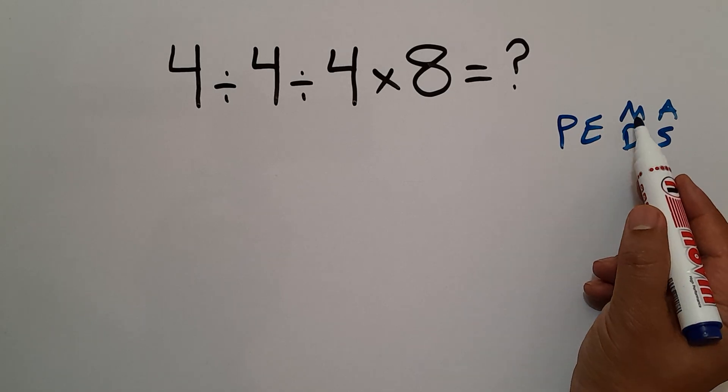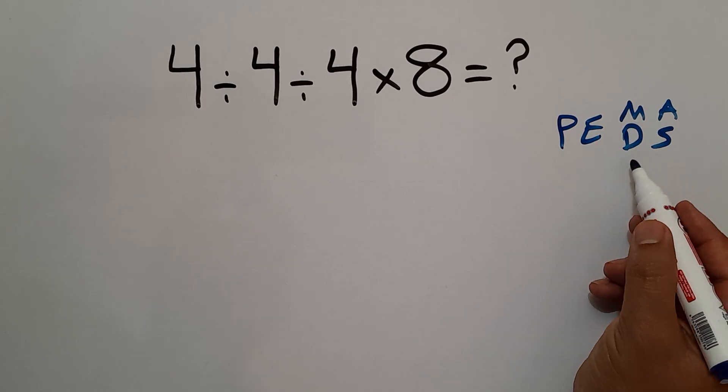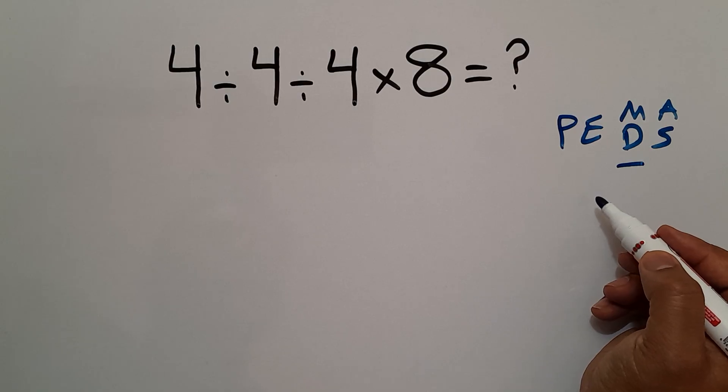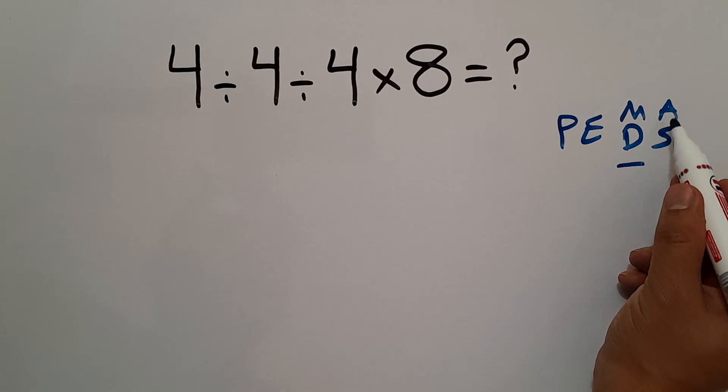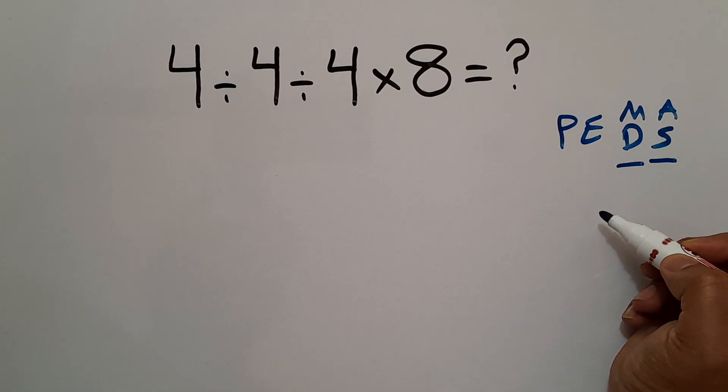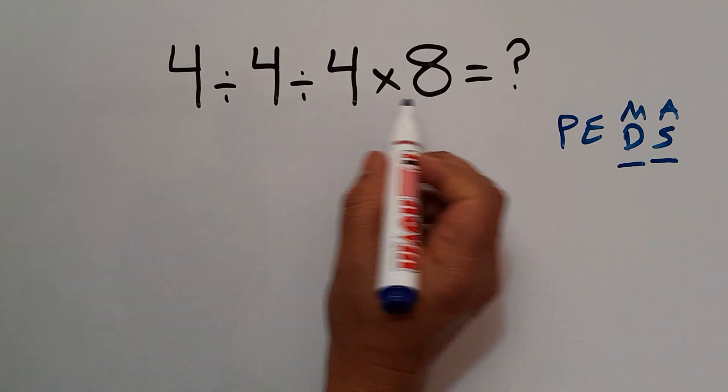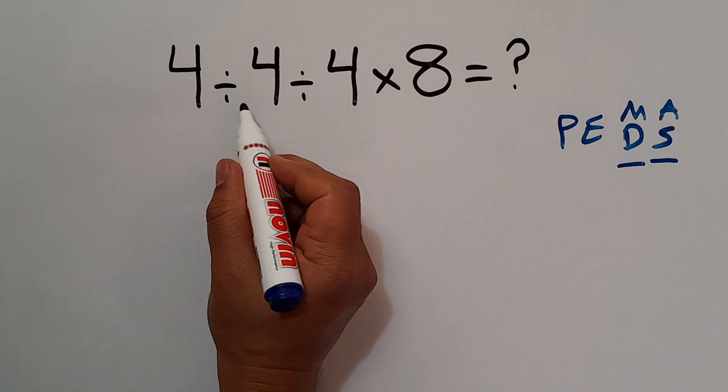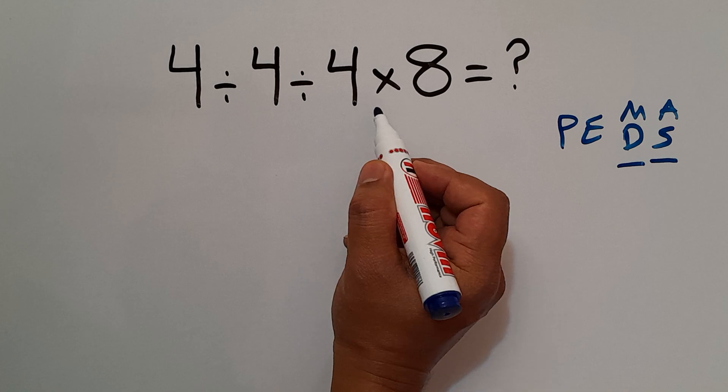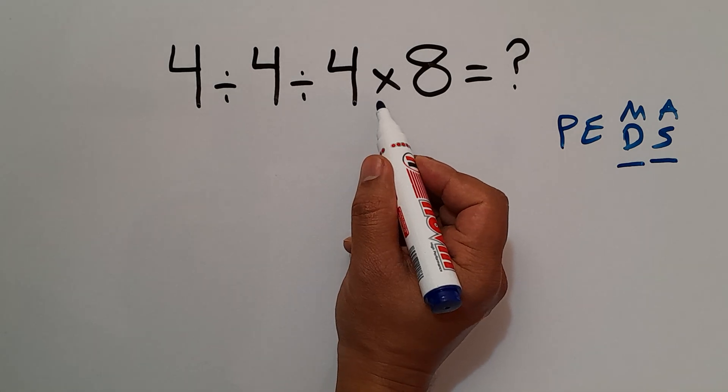Remember that multiplication and division have equal priority and we have to work from left to right, and the same applies to addition and subtraction. Here in this expression we have two divisions and one multiplication.